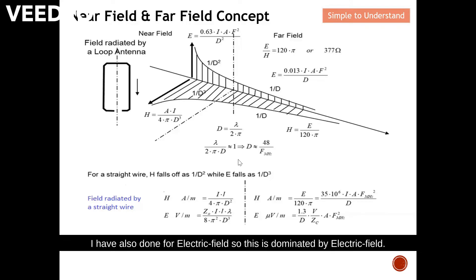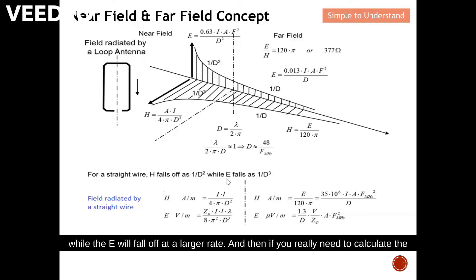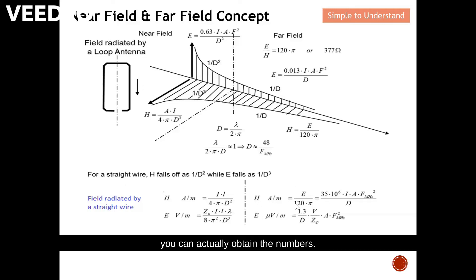For the electric field dominant case, once dominated by electric field, the H field falls off at a slower rate while the E field falls off at a larger rate. If you need to calculate the H and E values under the near field and under the far field, you can obtain the numbers using these formulas. With that, I'd like to end my discussion. Please like and subscribe — thank you so much.